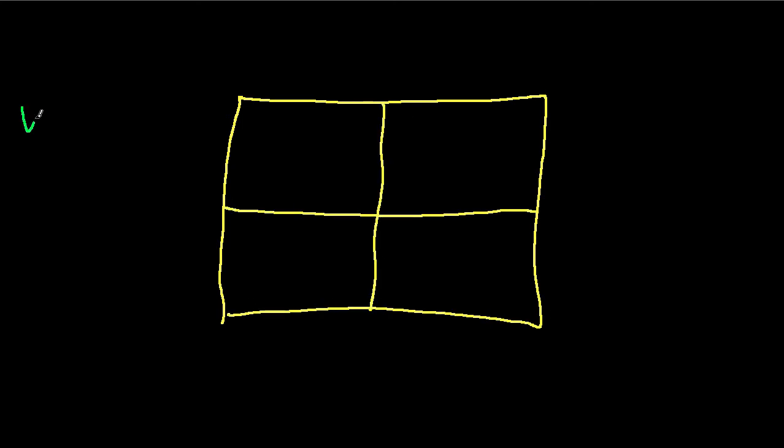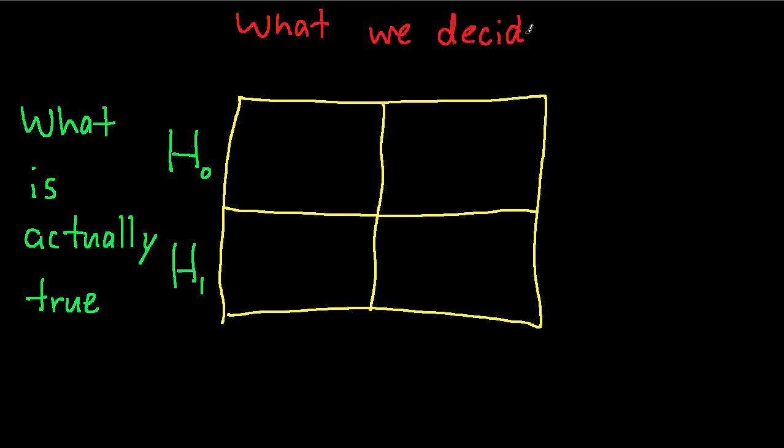We can represent this decision process in terms of a table. On this side of the table, we have what is actually true. Is h0 true or is h1 true? On the top of the table, we have what we decide. And again, this is a decision we make based on our observations. We can decide to accept h0 as being true, or we can decide to reject h0 as not being true.